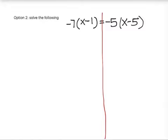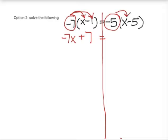So I will need to distribute the number that's right in front of the parentheses. Here it's a negative 7 times x. So negative 7x. Negative 7 times negative 1 is positive 7 equals. And I have to distribute over here also. Negative 5 times x. And distribute again. Negative 5 times negative 5 is positive 25. I've distributed and got rid of all of my parentheses.